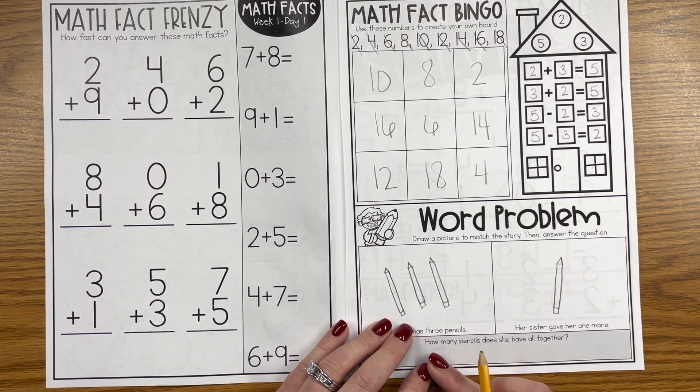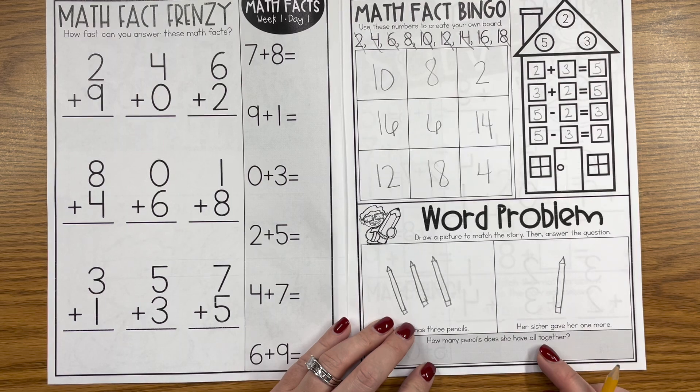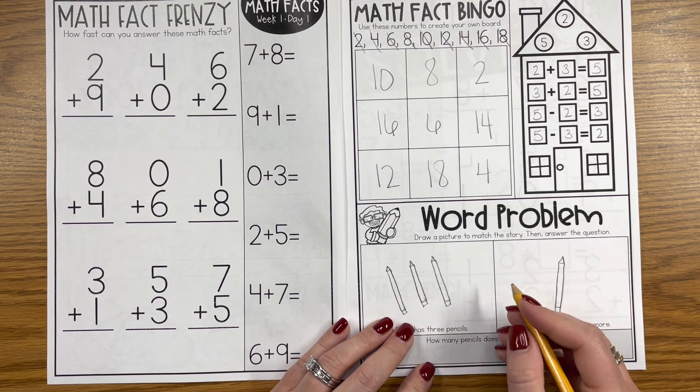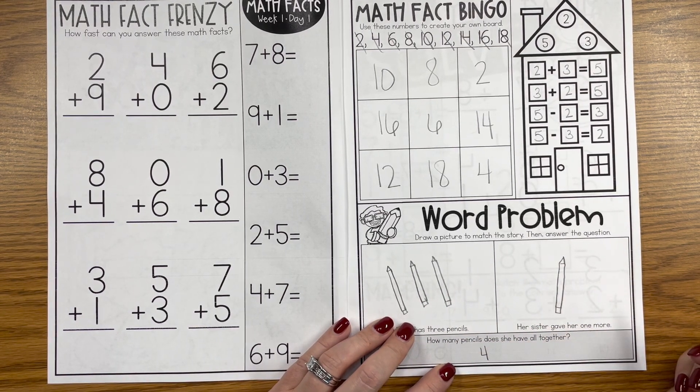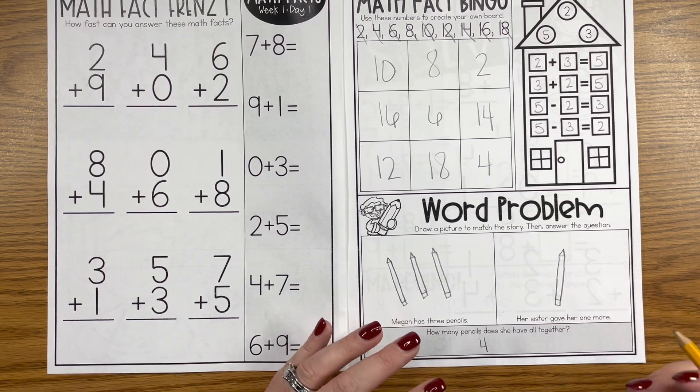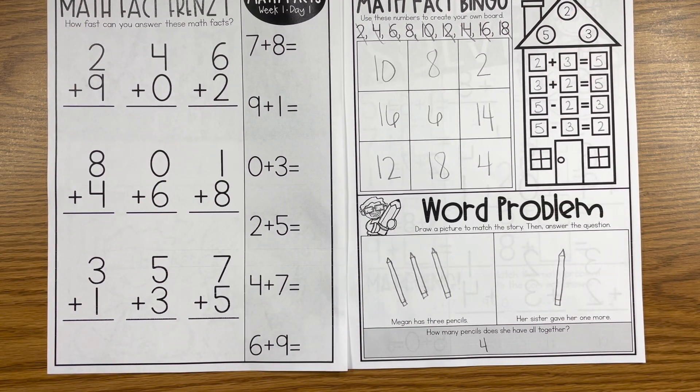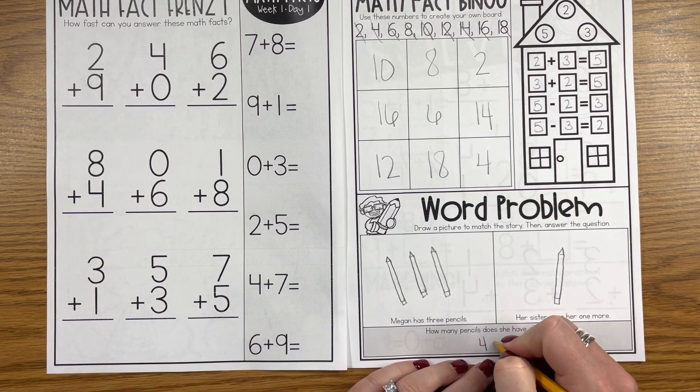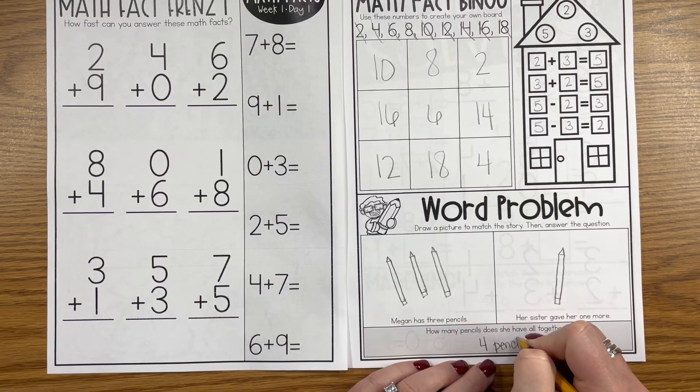Down below it says how many pencils does she have all together, so then we could use our picture to count these. I try to keep very simple numbers so that they are able to be drawn in a quick period of time. We're not going to draw 36 pencils or anything ridiculous, but four pencils.